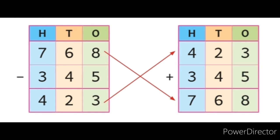Let's take an example and check the relation between addition and subtraction. So, 768 minus 345, then we get 423.